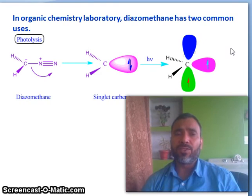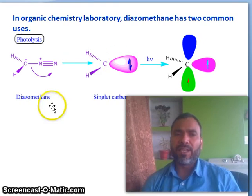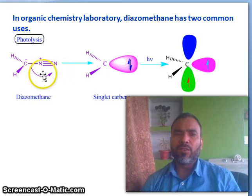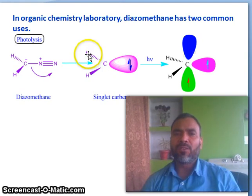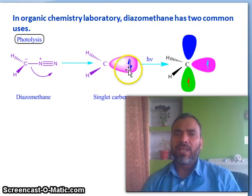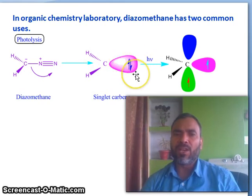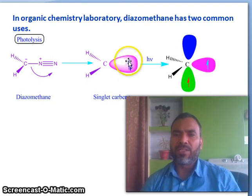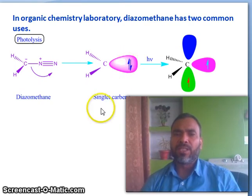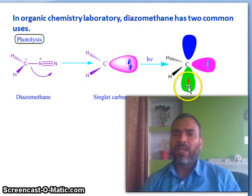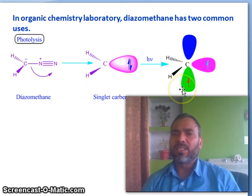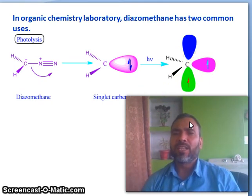A very important point: Diazomethane under photolysis removes nitrogen. It then becomes a carbene — carbon with two single bonds to hydrogen and two electrons, either spin-paired (singlet carbene) or both spin-up (triplet carbene). So we get singlet carbene and triplet carbene, which you will learn about as reaction intermediates.